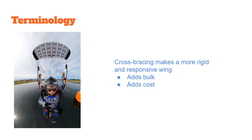When talking about very high performance parachutes, you might also hear the term cross bracing. Cross bracing refers to little V-shapes visible on the parachute that help make for a more rigid and therefore responsive wing, but it also adds bulk. These pack up larger than a similarly sized non-cross-braced parachute, and they cost a lot more because of extra fabric and more sewing. So you're only going to find these on very high performance parachutes.